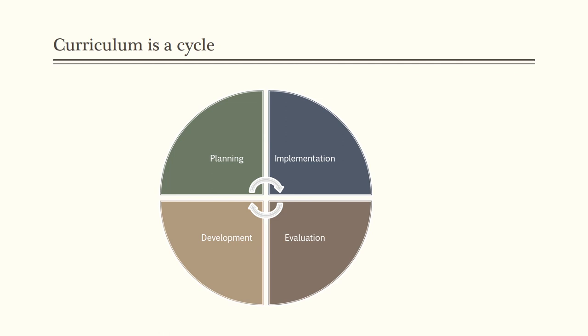All in all, look at the curriculum as a cycle, not as a straight line. When you do this, it will mean none of the process is done once and for all. Planning, implementation, evaluation, and development are ongoing processes which are related.